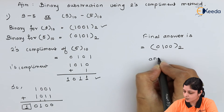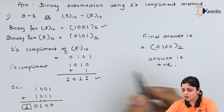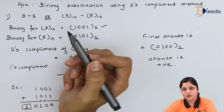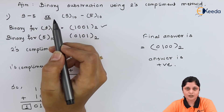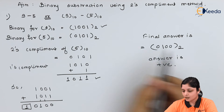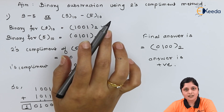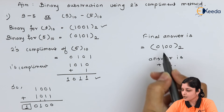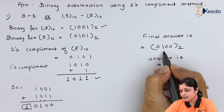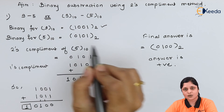The answer is positive. Why is the answer positive? Because we already know from decimal subtraction that 9 minus 5 equals 4. So if you want to cross-check, the value you should get is plus 4. Since the answer is positive, we have not taken the 2's complement of the addition result; we simply wrote the answer by neglecting the carry. The decimal value of 0100 is 4, so your answer is confirmed.